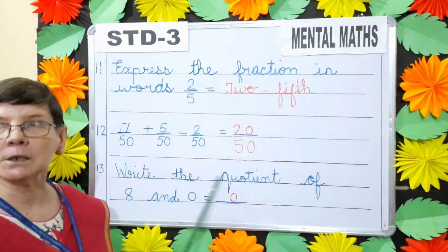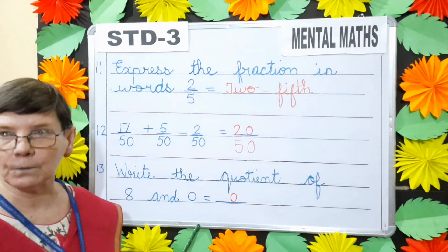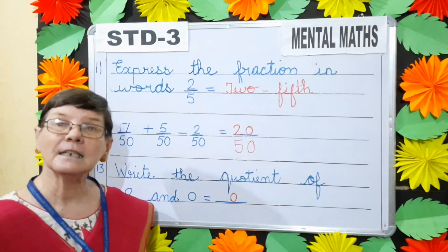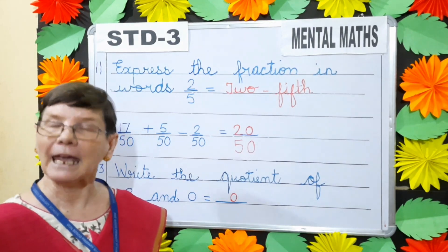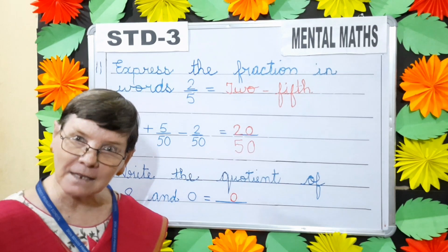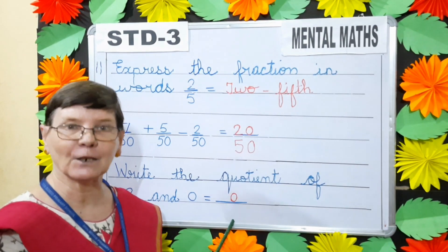Next, write the quotient of 8 and 0. Quotient here is the answer in division. So when you divide any number by 0, you will get the quotient as 0. So the quotient here is 0.